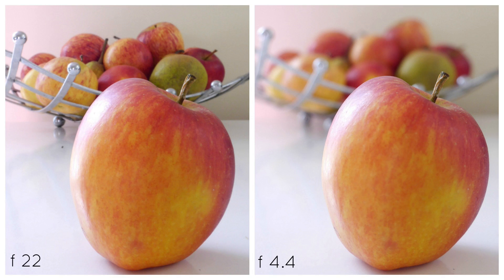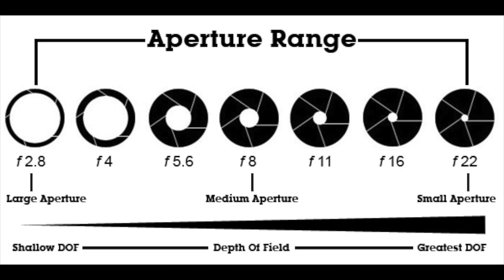Starting with aperture, it's also known as f-stop, which makes a whole lot more sense to me because on the settings of your camera it'll show up as f2.2, f5.6, f22, etc. So the lower the number, the more light your lens is letting in when you take your shot, which creates more blur in the background of your photo. The higher the number, the less light it's letting in and the sharper your background will be. I really found that this image helped me to understand — I'll link the source below in the description box.